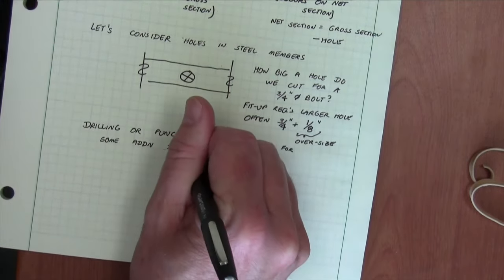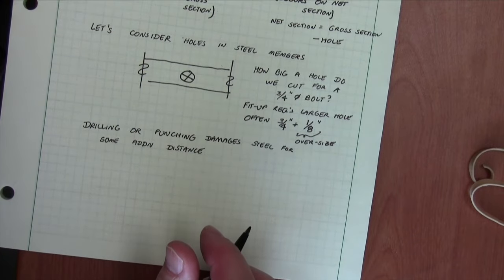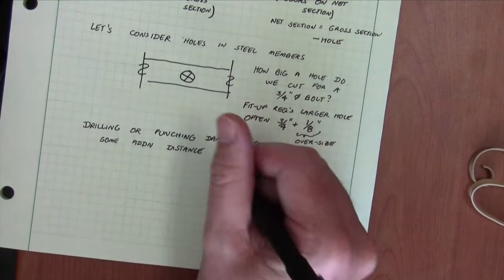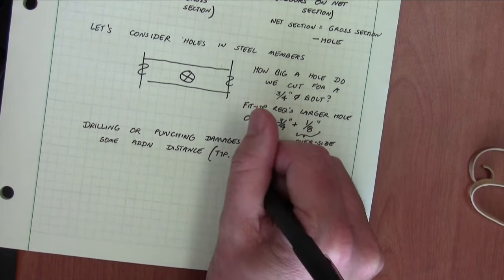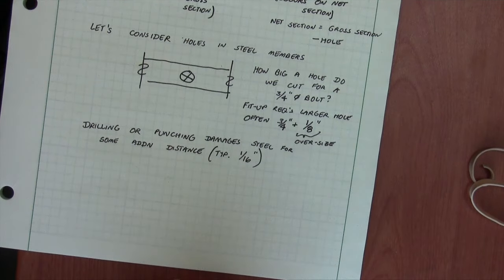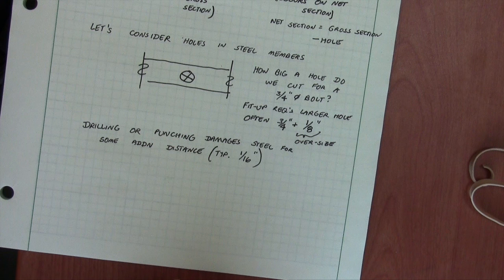The other issue that's significant is that drilling or punching the steel, which we do to put the hole in it, causes some damage around the hole. Oftentimes we assume this to be a sixteenth of an inch. So we've got to account for both the oversizing the holes and the damage of the steel.